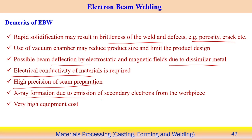X-ray formation occurs due to emission of secondary electrons from the workpiece, which is another significant demerit of electron beam welding. Equipment cost is very very high. Despite these disadvantages, electron beam welding is used when very high precision and nearly defect-free components are required.